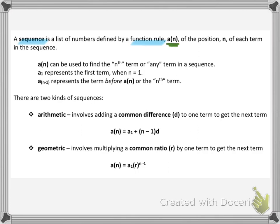A of n represents any term in the sequence. The actual numbers themselves are called terms. This is just like function notation: a is the name of the sequence, n is the position, or the spot that that number is in. The first term would have an n value of 1, the second term an n value of 2, and so on. A sub 1 represents the very first term, when n equals 1 — the very first number in the actual sequence.